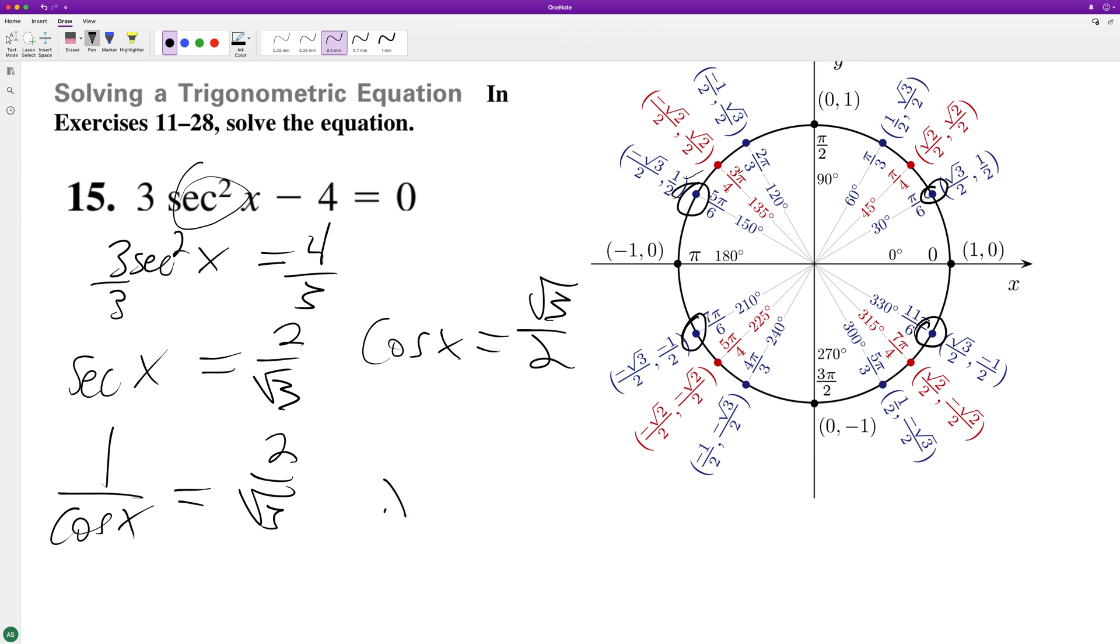Technically you can simplify down to—instead of 2πn—X is going to equal π over 6 plus πn, because n is an integer. So if you have 0 for n, you just have π over 6. If you have 1, you have 7π over 6.